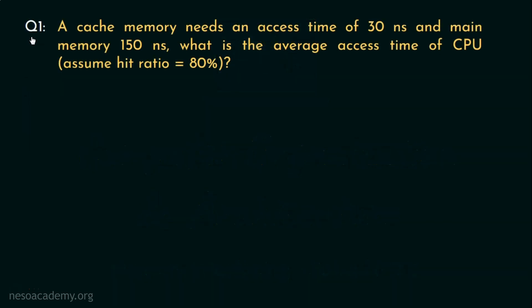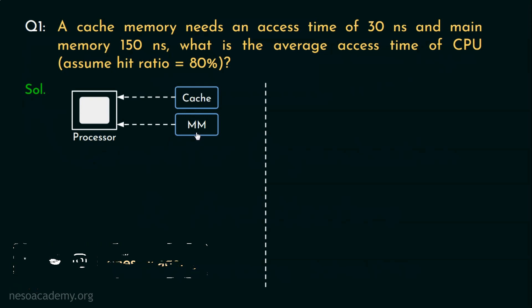Let's begin with question number one. A cache memory needs an access time of 30 nanoseconds and main memory 150 nanoseconds. What is the average access time of the CPU assuming hit ratio is 80%? Now there are two possible solutions to this question. We will see them one by one. First approach: assume both the cache and the main memory are simultaneously connected to the processor. The question states that the access time of cache, T_cache, is 30 nanoseconds. Also, T_MM or the access time of the main memory is 150 nanoseconds.